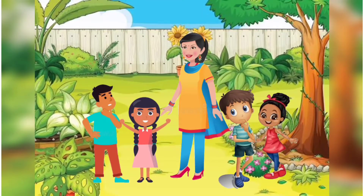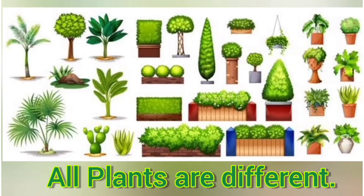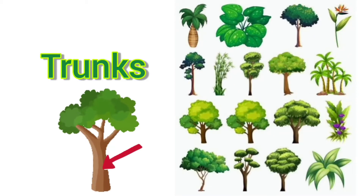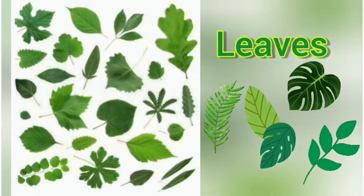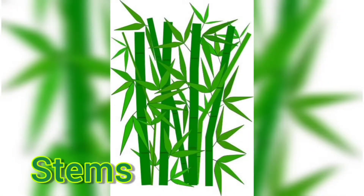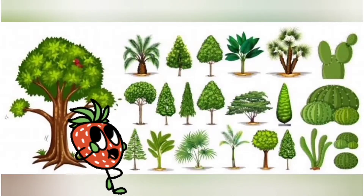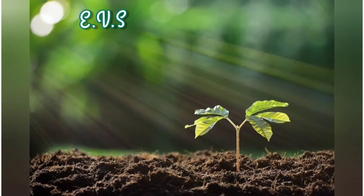During the game, the children noticed that all the plants are different from one another. The trunks, leaves, and stems are all different. Let us learn about some of the differences in plants in our lesson.